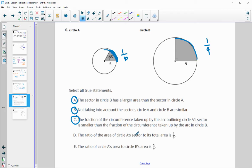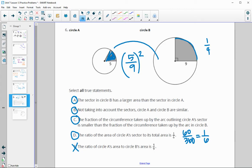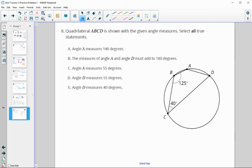The ratio of the area of circle A's sector to its total is 1 sixth. So the ratio of this area to the total is 1 sixth. That's true because it's a 60 out of 360 chunk and that simplifies to a sixth. The ratio of circle A's area to circle B's area is 5 9ths. Well, that's the scale factor from B back to A. When we start comparing areas with scale factors, remember areas are the scale factor squared. So this is going to be false.